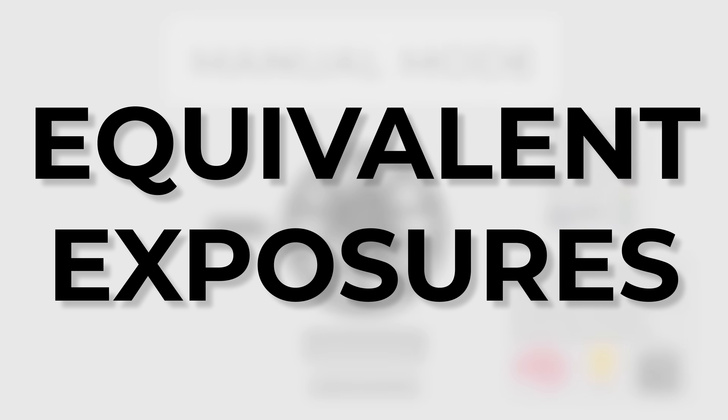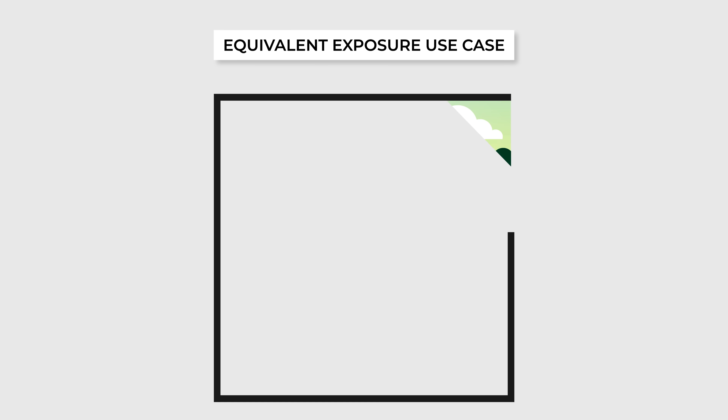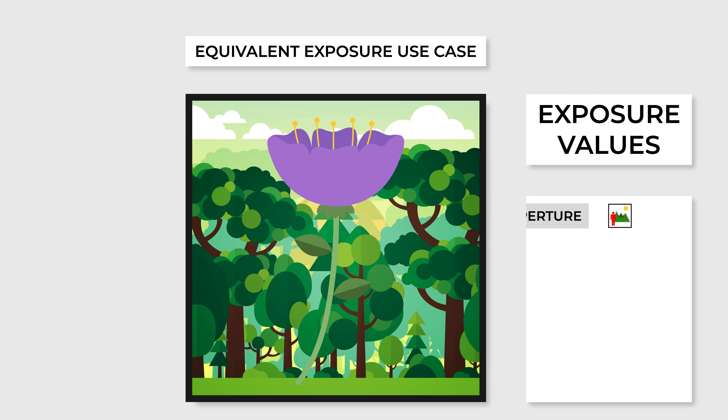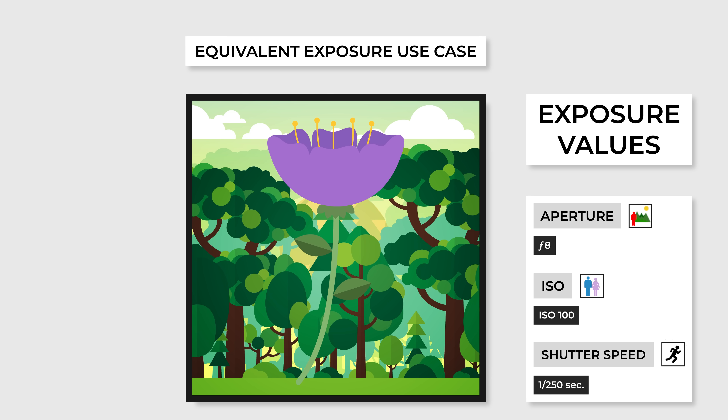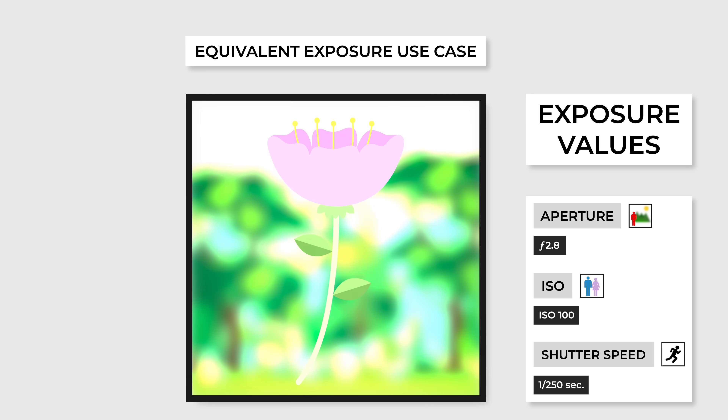Let's talk about equivalent exposures. Let's say you want to photograph a flower in bright sunlight and find that using an aperture of f8, an ISO of 100, and a shutter speed of 1/250th of a second produces a sufficiently bright image, but doesn't have the shallow depth of field effect that you envisioned. If you wanted to use your lens's maximum aperture to create a shallow depth of field — let's say the lens can stop down to a maximum of f2.8 — and try to take a photo, it would be extremely overexposed.